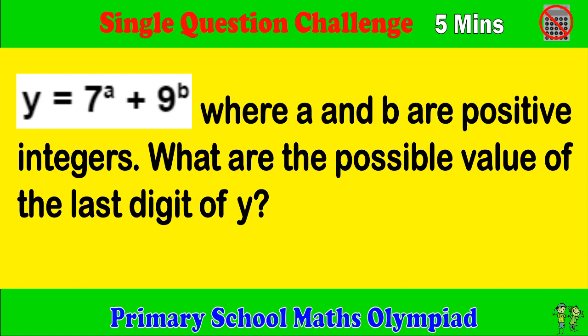Primary school maths olympiad single question challenge. Try to complete the question within five minutes please. y equals 7 to the power of a plus 9 to the power of b, where a and b are positive integers. What are the possible values of the last digit of y?